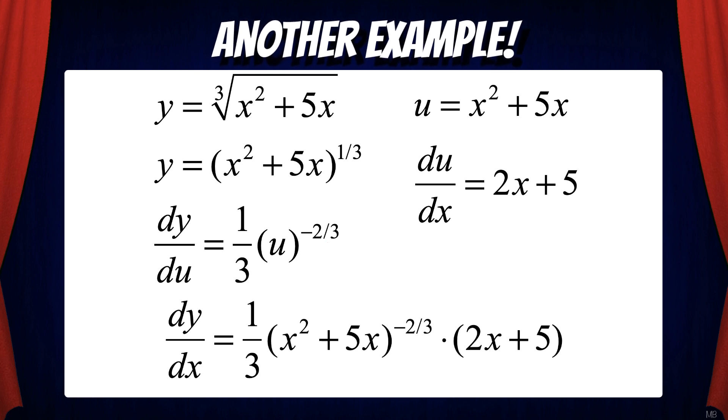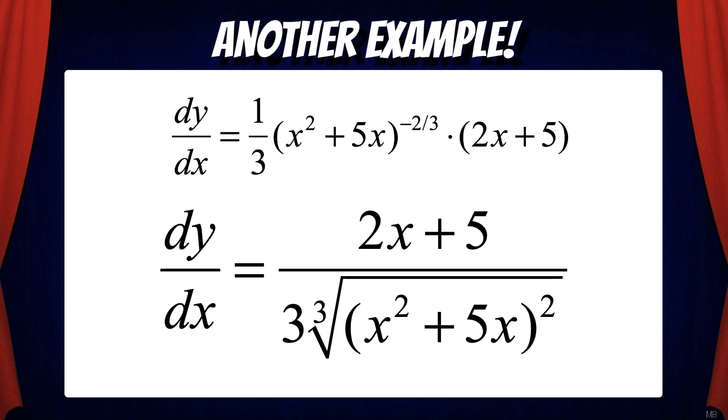We can simplify the algebra by keeping the 2x plus 5 in the numerator and moving the x squared plus 5x to the negative 2/3 to the denominator and converting that to a radical. So that leaves us with 2x plus 5 divided by 3 times the cube root of the quantity x squared plus 5x squared. And that's the derivative.